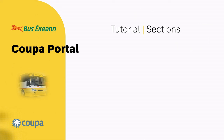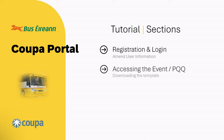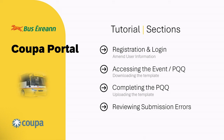The tutorial is broken down into the following sections: registration and login, including how to amend user information; accessing the event, including downloading the template; completing the PQQ, including uploading the template; reviewing any submission errors that may occur during the upload process; and finally, how to submit clarification questions that you may have in relation to your PQQ submission.